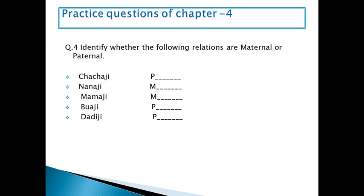Next question: identify whether the following relations are maternal or paternal. Maternal means family members of the mother's side and paternal means family members of the father's side. Chacha ji is paternal side because he is our father's brother. Nana ji is maternal side — he is our mother's father. Mama ji is maternal side — he is our mother's brother. Bhuha ji is paternal side. Dadi ji is also paternal side — she is the father's mother. These are all the practice questions of Chapter 4.